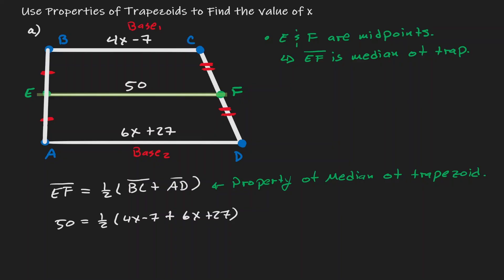Let's start by combining like terms. Then we have 50 equals one half, 10x plus 20. Let's get rid of the one half, let's multiply by 2.